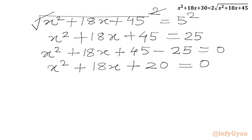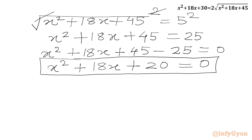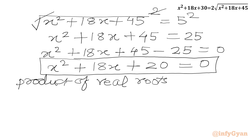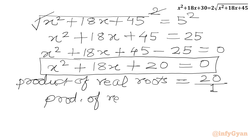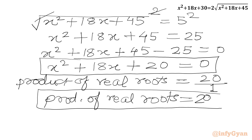Now for the product of the real roots: from the equation x squared plus 18x plus 20 equals 0, using Vieta's formula, the product of the real roots equals the constant term over the leading coefficient, which is 20 over 1, equal to 20. So the product of the real roots is 20.